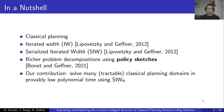In this work we address the classical planning problem where we are given a planning task that consists of a domain and instance information. The domain consists of predicates and action schemas over these predicates, and the instance information consists of objects occurring in the instance and two sets of ground literals: the first describing the initial situation and the second describing a goal situation. The objective is to find an action sequence that when applied to the initial situation brings us to a goal situation.